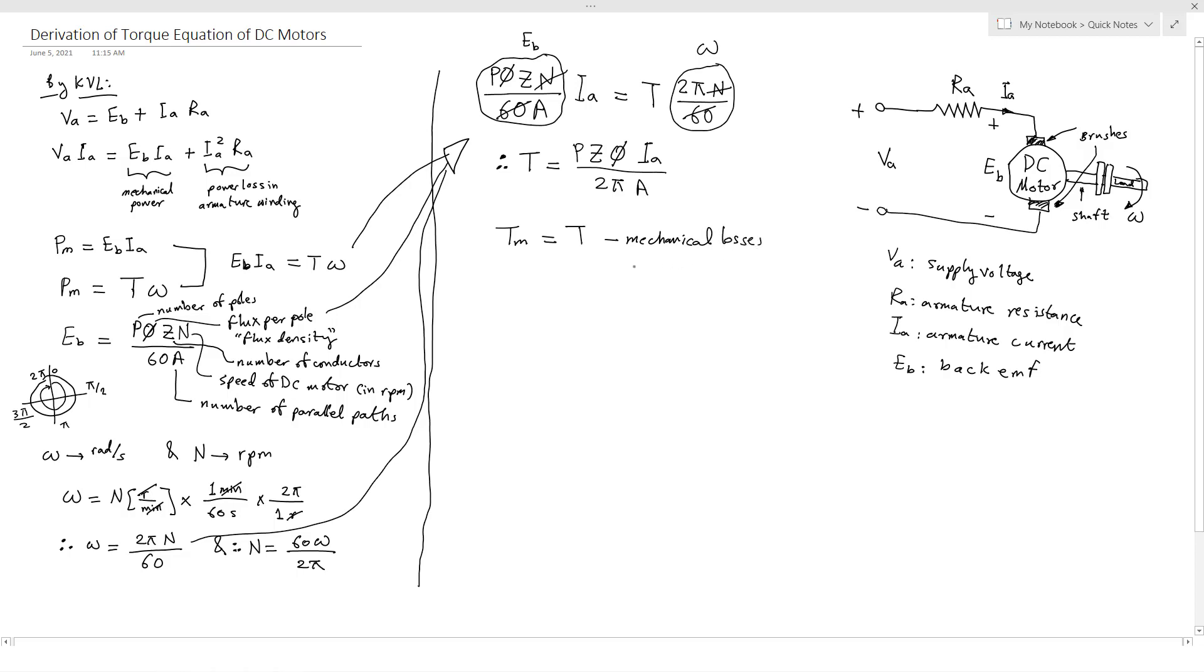This is the torque equation of DC motor. It can be further simplified as follows: T equals K phi IA, because these are constant, equal K.